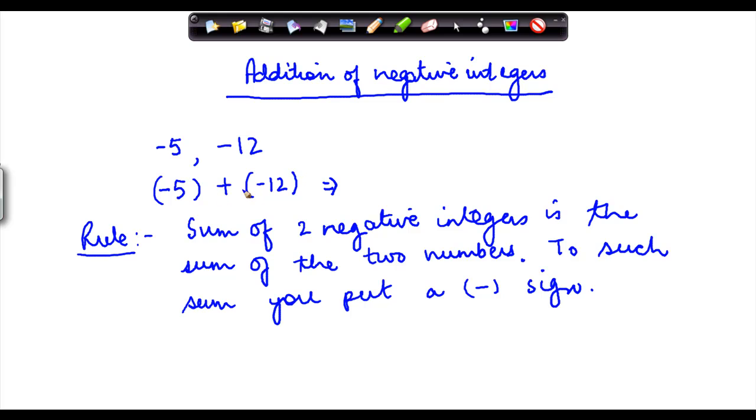So what happens here is that you have two numbers, you have five and twelve, both with a negative sign. So how do you compute the total? The rule says that if you have to find out the sum of these two integers, you have to add them together. So 5 and 12 makes it how much? 17. And to the sum which comes in, you put in a negative sign, which means you put in a minus here.